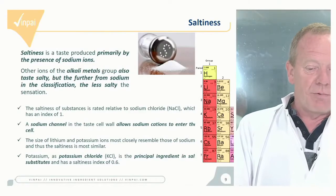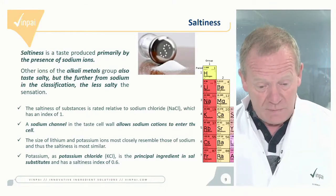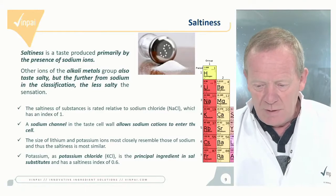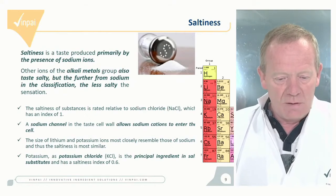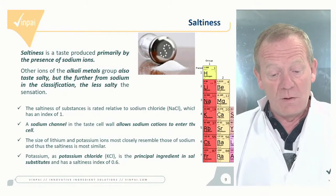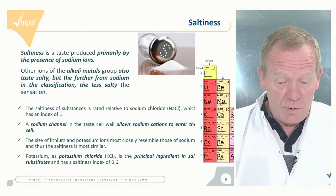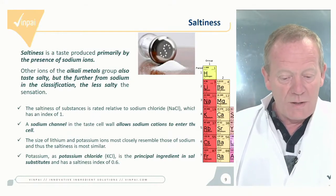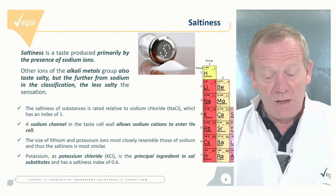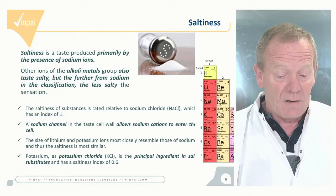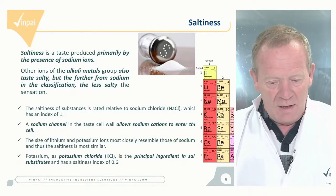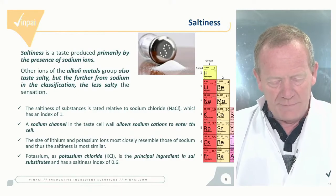Saltiness is a taste produced primarily by the presence of sodium ions, but other ions of the alkali metal group — lithium, sodium, potassium, rubidium, and so on — can also produce a salty taste, though the further from sodium in the classification, the less salty the sensation. Sodium has a saltiness index of one. Potassium, under the form of potassium chloride, is the principal ingredient in salt substitutes, with a saltiness index of 0.6 compared to one for sodium. The recognition of saltiness is linked to sodium ions entering the cells directly through the proton channel.